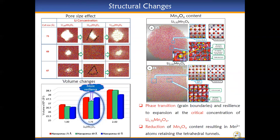Further observations on the structures show that the spinel Mn3-O4 content gets reduced with increasing lithium concentration, resulting in Mn2+ atoms retaining the tetrahedral corners and also providing channels for lithium diffusion.